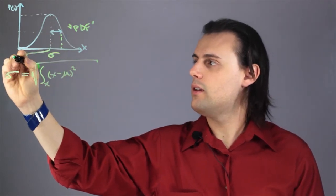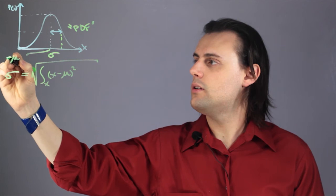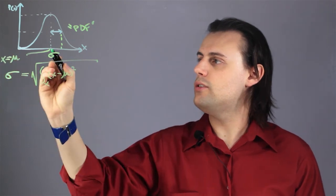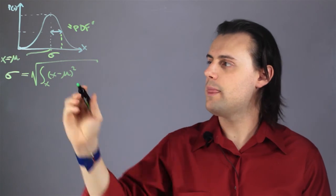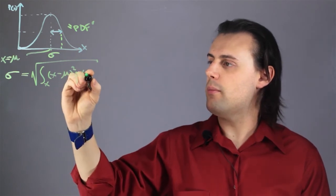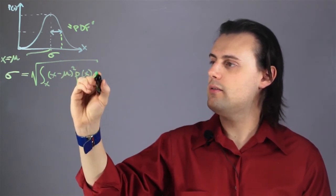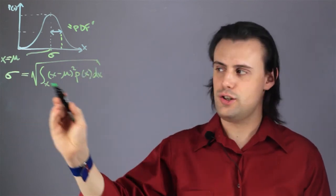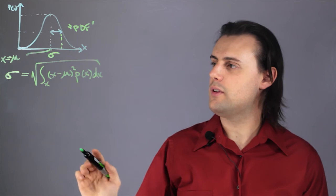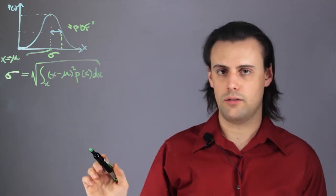So, here, mu is equal to this point in x, for this normal distribution, times the probability distribution in x, dx. So, this is our definition for the standard deviation for a continuous random variable.